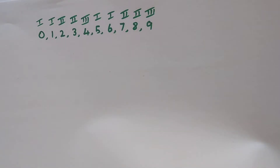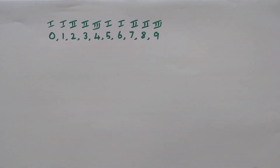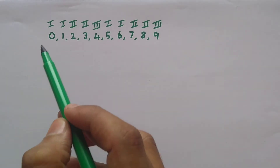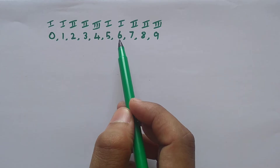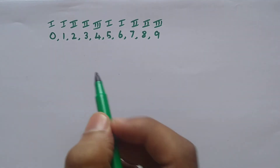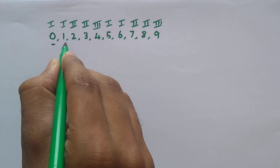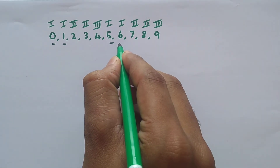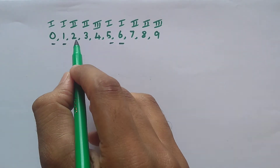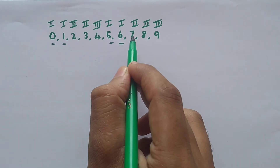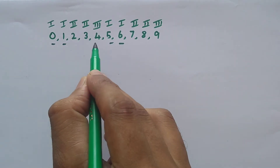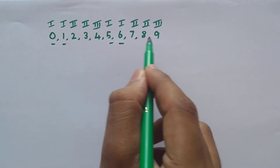Basically we have 10 numbers, from 0 to 9, and we can divide these into 3 categories. Category 1 numbers are 0, 1, 5, and 6 — marked with Roman numerals for your understanding. Category 2 numbers are 2, 3, 7, and 8. And the final category 3 is 4 and 9. This classification is based on cyclicity.